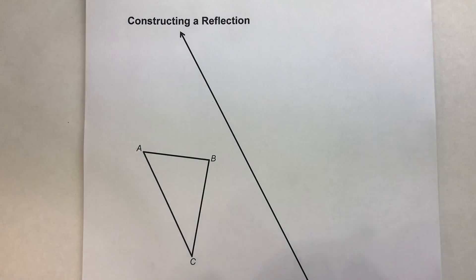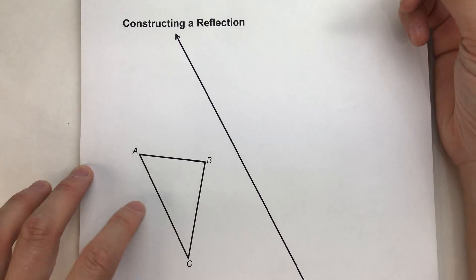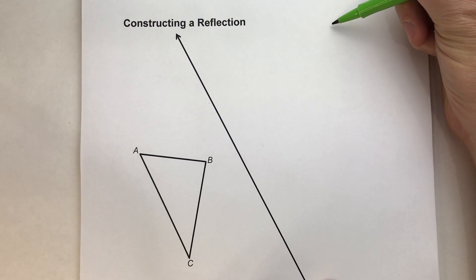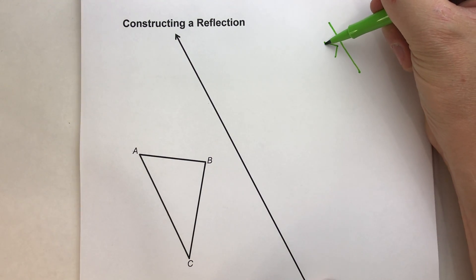But before we do the actual construction, let's talk about some strategies here on what we're doing. So over here, I'm going to just sketch out a little diagram here. So here's my line, here's my polygon.